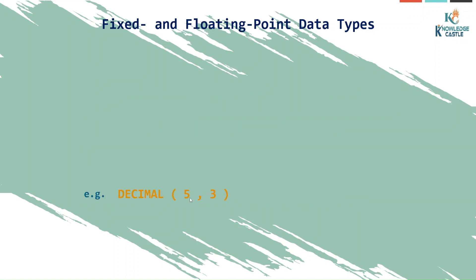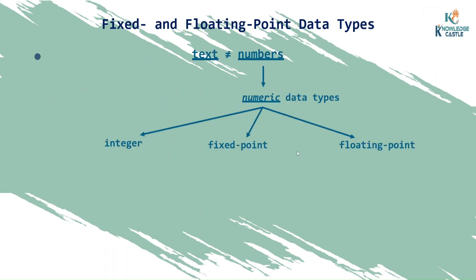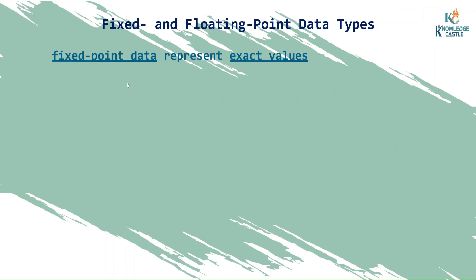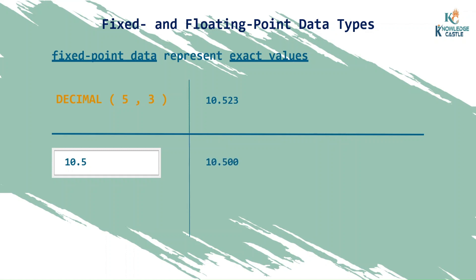For the fixed data type, the name is decimal, written as decimal(5, 3) — precision five, scale three. The problem with fixed data type is it represents exact values. If someone enters 10.5, it will display as 10.500 because precision is five and scale is three, so it shows exactly five digits with three decimal places.